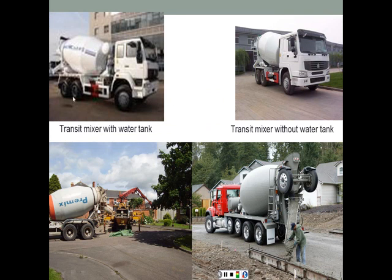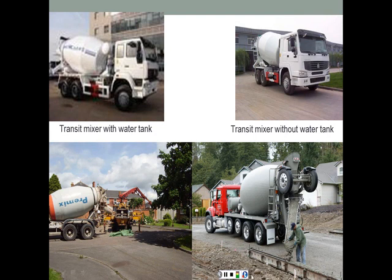Here we have a transit mixer — you can see the drum is tilted slightly, and here's the water tank that can add water as the truck approaches the site. This one is a transit mixer without a water tank, used for shorter distances where the wet mix is loaded directly. At the end of the drum is a chute used to discharge the concrete — used here for pavement — and here's another example of the drum discharging concrete into a loader that can carry it further.